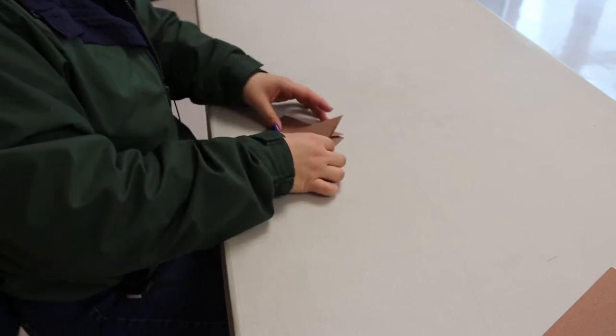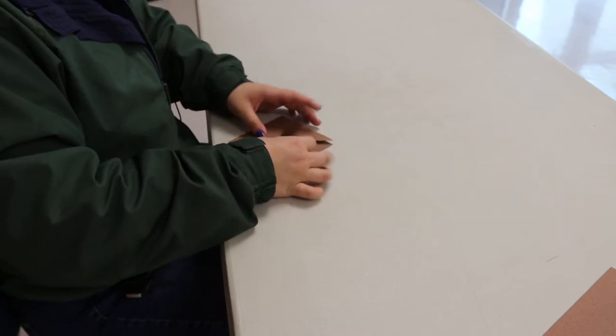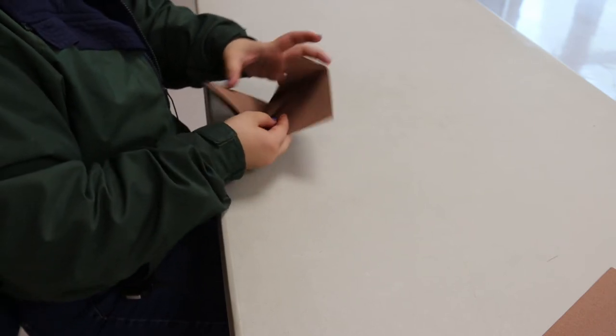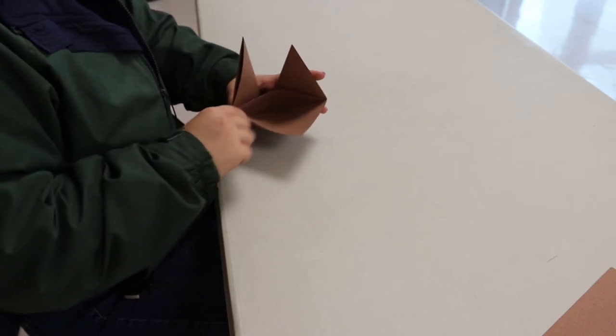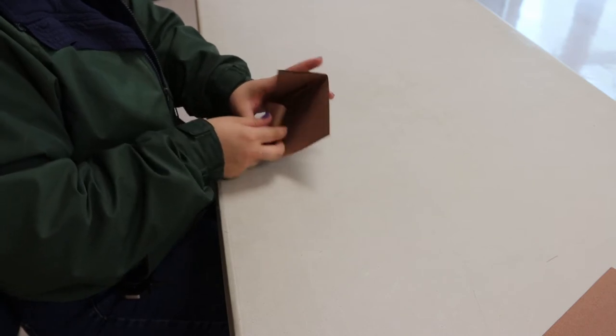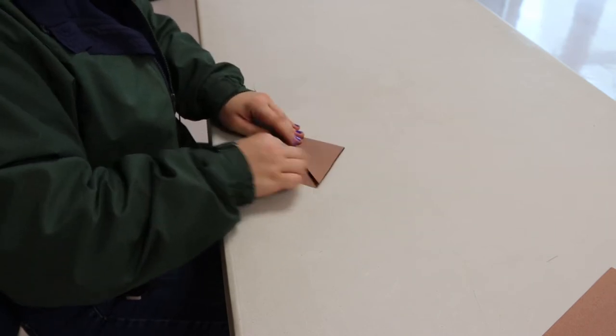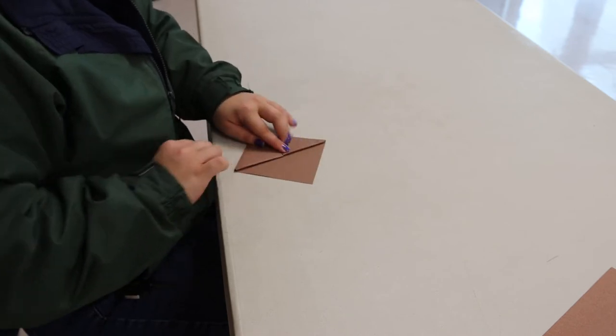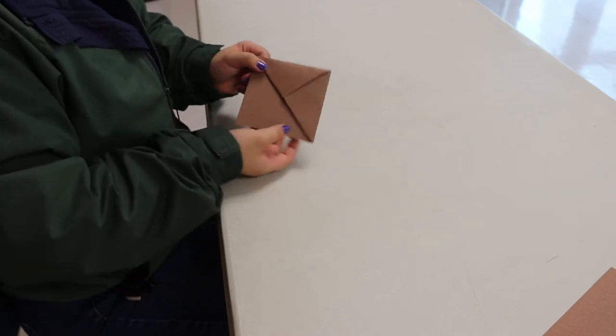Now you're left with these two flaps and what you're going to do is fold them and tuck them under the center. I'm going to tuck them and fold them into the center. Now we're done with the body of the ox.